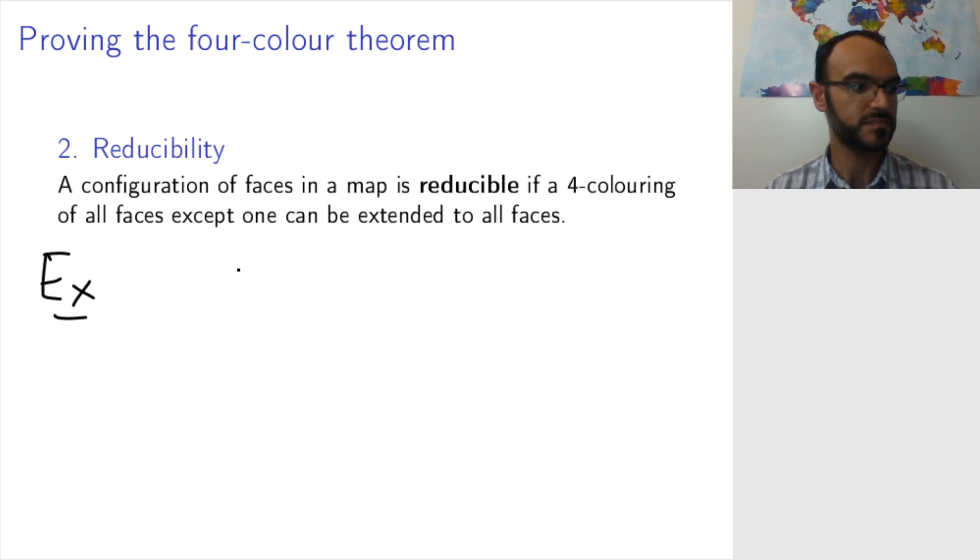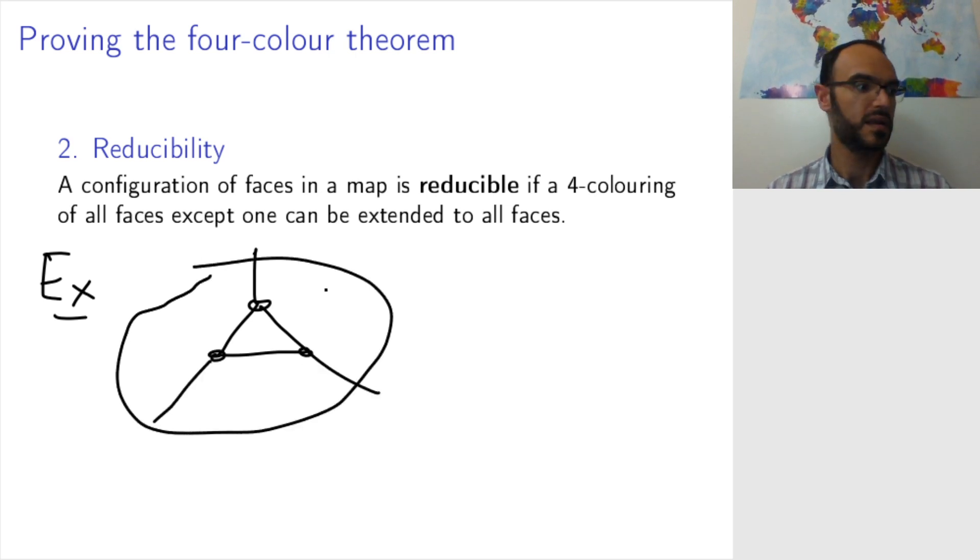So for example, this configuration. So I'm just going to zoom in on it here. This configuration is reducible, because if I can color all these faces,